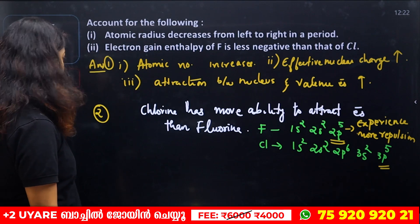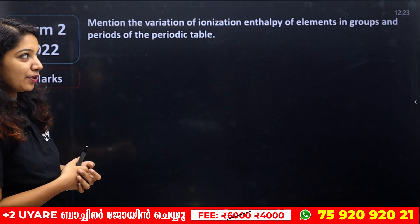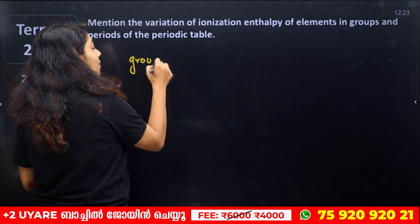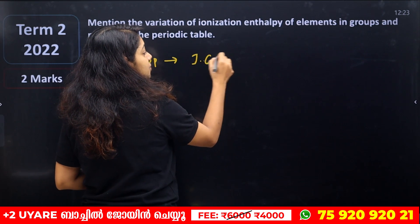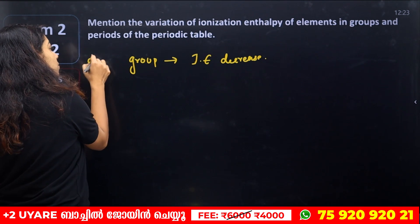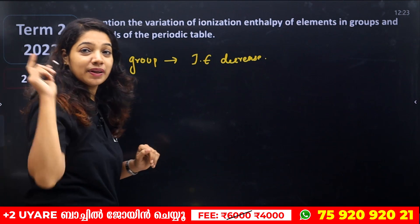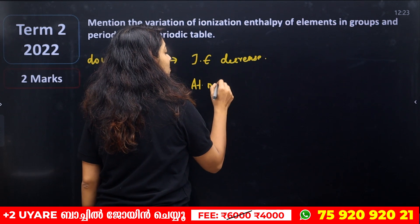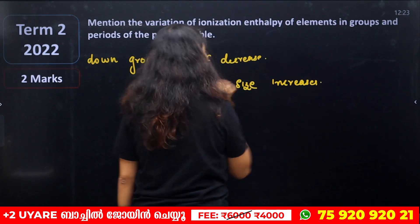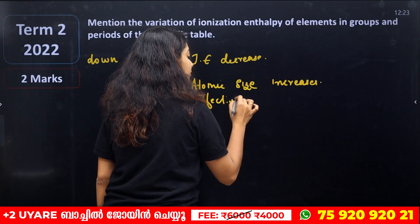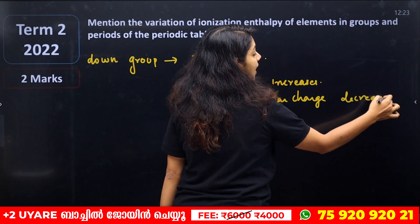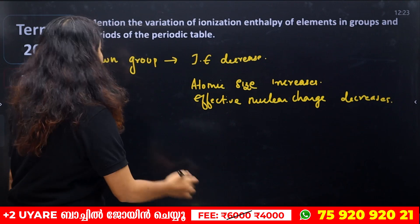Let's look at the variation of ionization enthalpy of elements in groups and periods of the periodic table. Down the group, ionization enthalpy decreases because atomic size increases and effective nuclear charge decreases. That's why ionization enthalpy decreases going down a group.